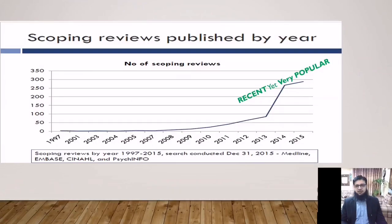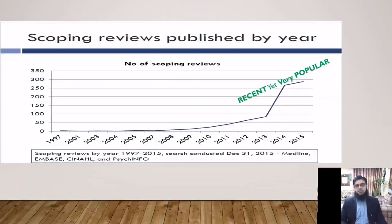From the graph, it is evident that scoping reviews have become an increasingly popular approach for synthesizing research evidence, with their number increasing in the last 8 to 10 years. Scoping review is a recent model that aims to answer broad questions and identify and expose the available evidence on a broader question. Being a rigorous and reproducible method, it is a relatively new approach without a universally accepted definition yet, but recently PRISMA — Preferred Reporting Items for Systematic Reviews and Meta-Analysis for Scoping Reviews — has published their guidelines.